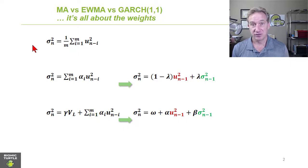My previous videos in this series took a deep dive with numerical examples of the three most common approaches to estimating current variance, or volatility: moving average, exponentially weighted moving average, and the very popular GARCH 1.1 model.